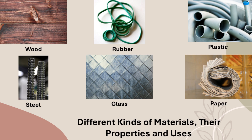Plastic comes from petroleum, which is dug from deep under the earth. It is a light, waterproof, strong, and durable material. It is used to make raincoats, furniture, boxes, buckets, tumblers, and many other things.